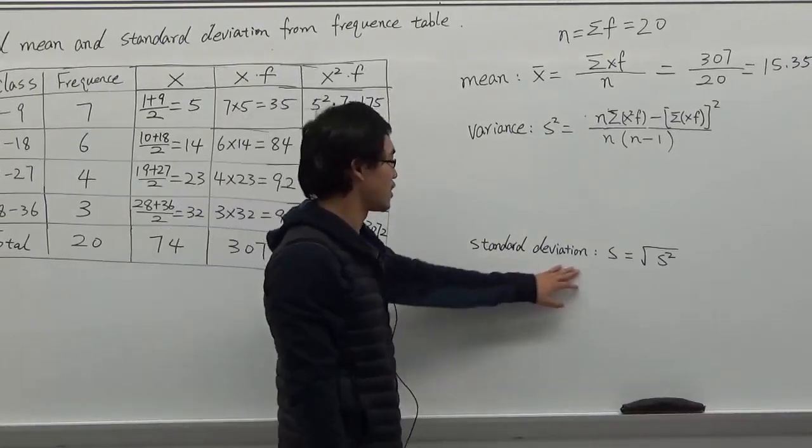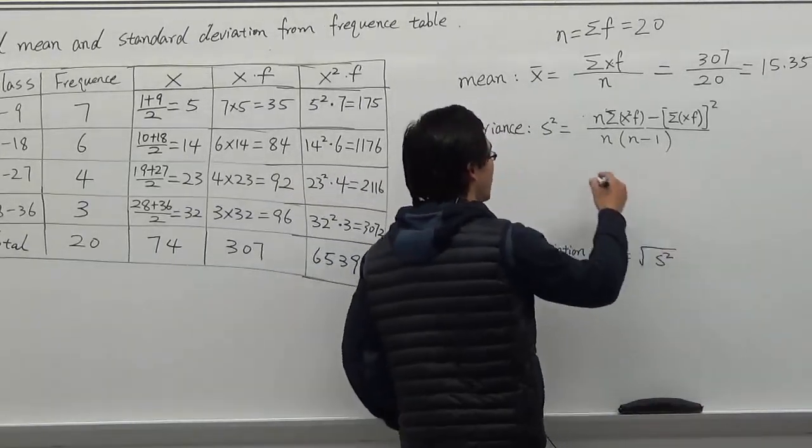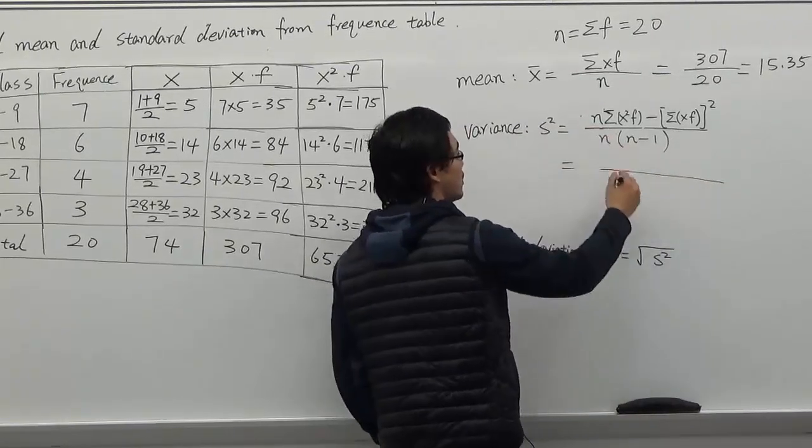So in order to find standard deviation, we first find the variance. This is the variance formula. And then we substitute n, in this case 20.